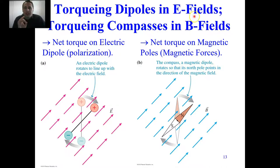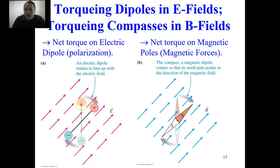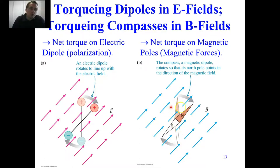Torquing dipoles in electric fields is very similar to torquing compasses in B fields. If you have a positive and negative charge dipole in an electric field, the positive charge has a clockwise torque and the negative charge also has a clockwise torque, so the electric dipole tends to align with the strong external electric field. Similarly, there's a net torque on magnetic poles — magnetic forces cause the compass needle to torque to align itself with the external magnetic field.